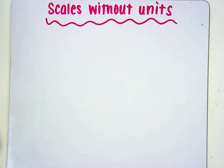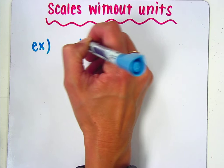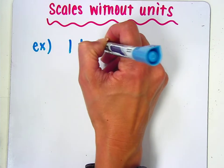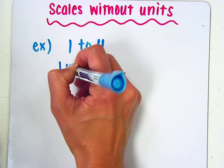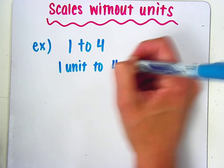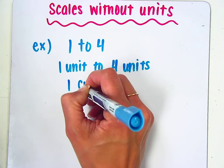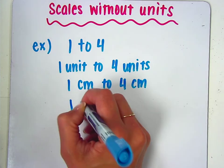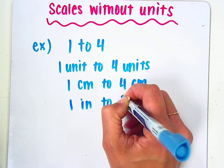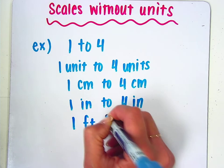Hey guys, it's Ms. DeLitto. Let's take a look at scales without units. An example of a scale without units would be 1 to 4. What this scale is telling us is that one unit represents four of those same units in real life. So an example could be 1 centimeter to 4 centimeters. Another example could be 1 inch to 4 inches. Another example could be 1 foot to 4 feet.